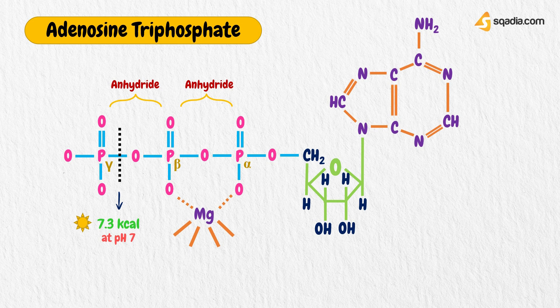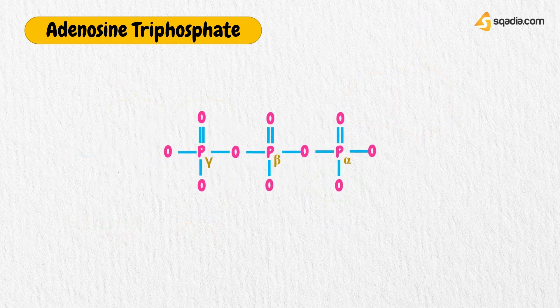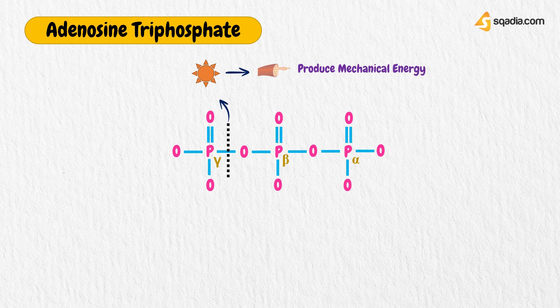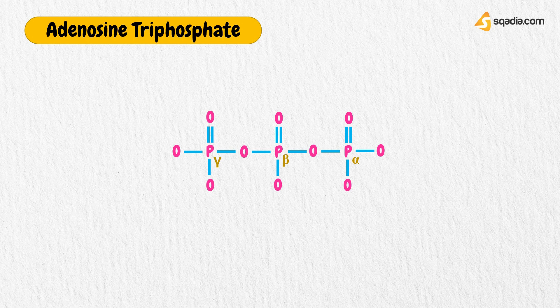These phosphoanhydride bonds are no different from any other covalent bonds. ATP hydrolysis is the catabolic reaction process by which chemical energy stored in the high-energy phosphoanhydride bonds in adenosine triphosphate is released after splitting these bonds — for example in muscles, by producing work in the form of mechanical energy. In ATP, the oxygen atoms of all three phosphate residues have similarly strong negative charges, while the phosphorus atoms represent centers of positive charge. One of the reasons for the instability of phosphoanhydride bonds is the repulsion between these negatively charged oxygen atoms.